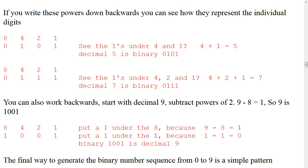You can also work this backwards by subtracting powers of 2. Start with decimal 9. Does 8 fit into 9? Yes — subtract 8, leaving 1, and put a 1 under 8. Does 4 fit into the remaining 1? No. Does 2 fit? No — put 0s under 4 and 2. Does 1 match the 1 left over? Yes — put a 1 under 1. So decimal 9 converts to binary 1001 by subtracting powers of 2.